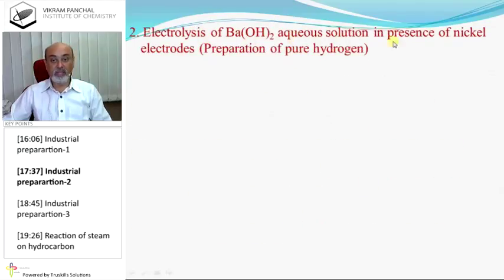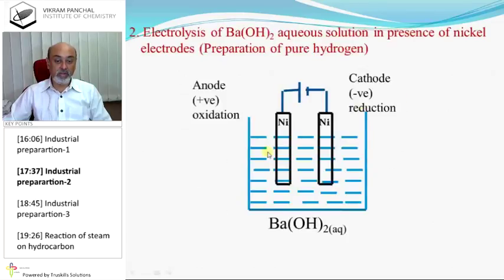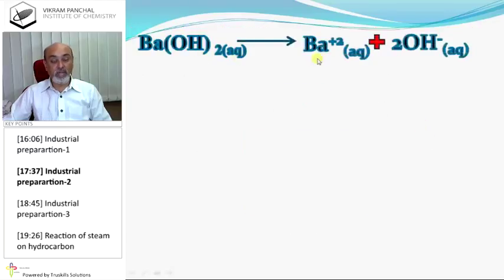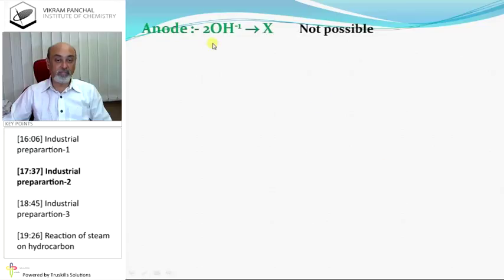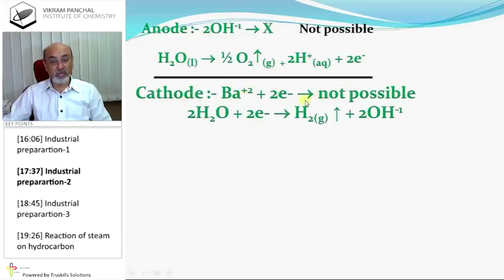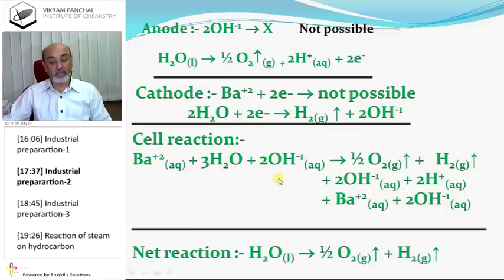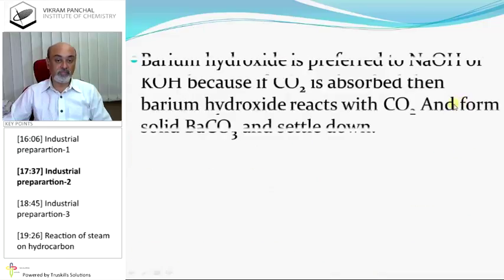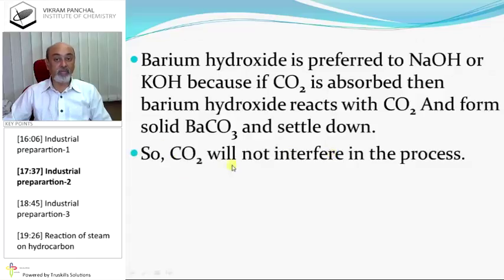Electrolysis of barium hydroxide aqueous solution with nickel electrodes is used for preparation of pure hydrogen. Barium hydroxide ionizes to Ba²⁺ and OH⁻; Ba²⁺ transfers to cathode and OH⁻ to anode. OH⁻ is not oxidized and Ba²⁺ is not reduced, so water is oxidized at the anode releasing oxygen and reduced at the cathode producing hydrogen. Barium hydroxide is preferred over NaOH or KOH because if CO2 is absorbed, it reacts with barium hydroxide to form solid barium carbonate that settles, so CO2 does not interfere in the process.